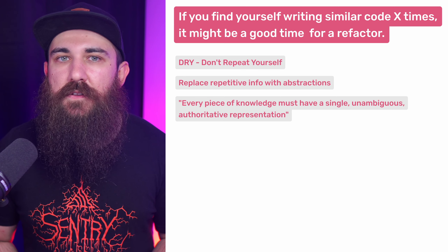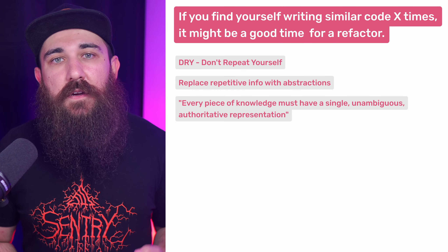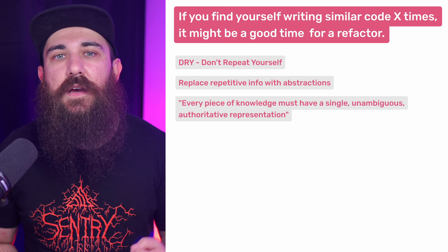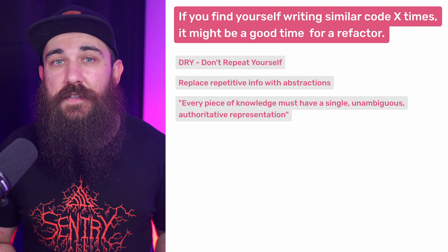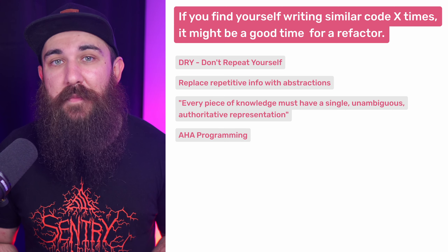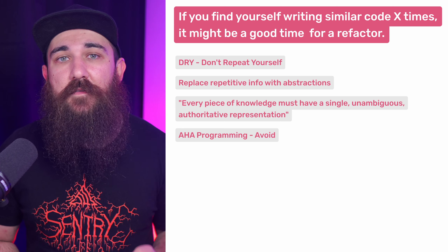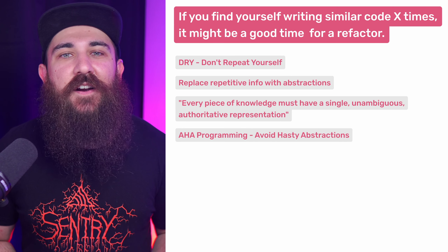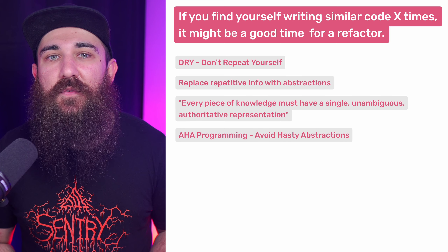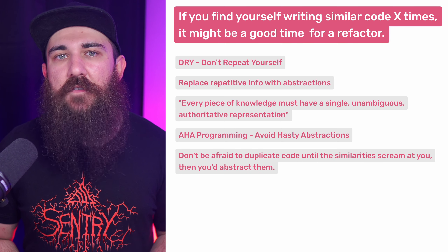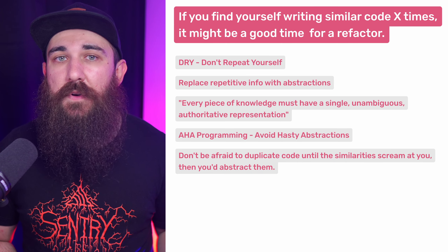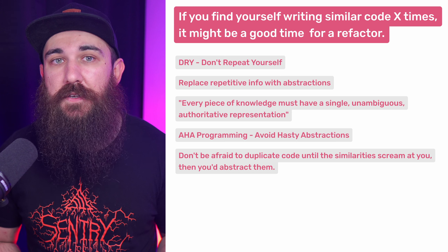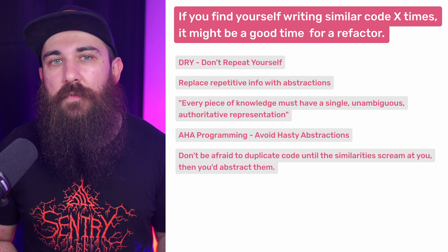There is an article by Kent C. Dodds that explains a good middle ground between duplicating and abstracting. He calls it AHA programming. AHA stands for Avoid Hasty Abstractions. The article summed up in one sentence is: don't be afraid to duplicate code until the similarities scream at you, then you would abstract them.